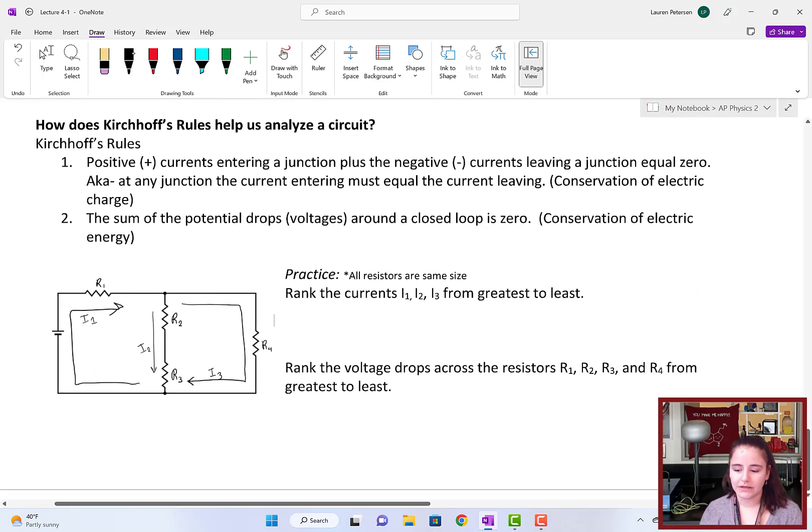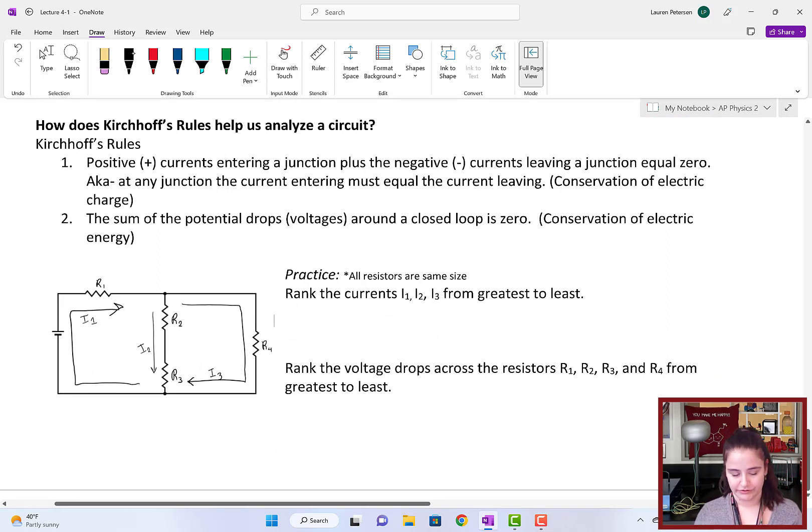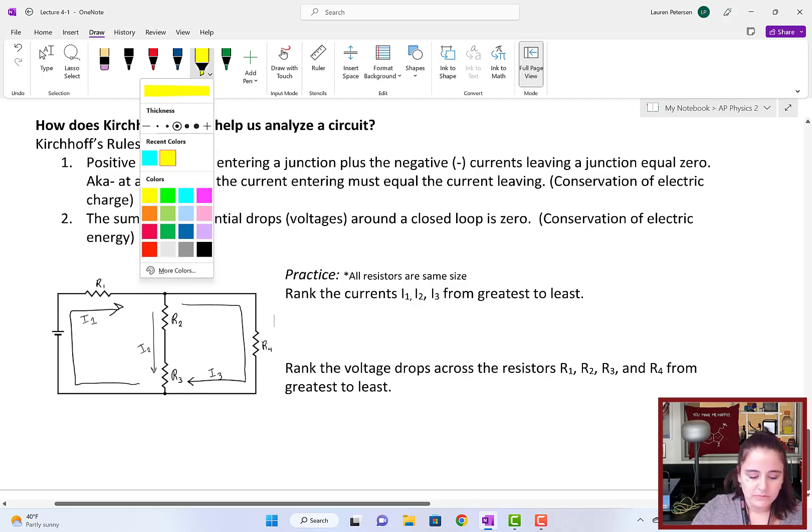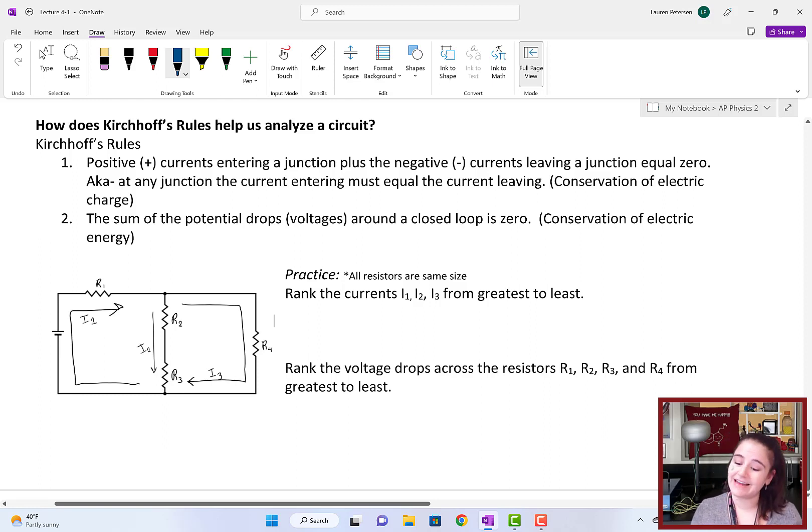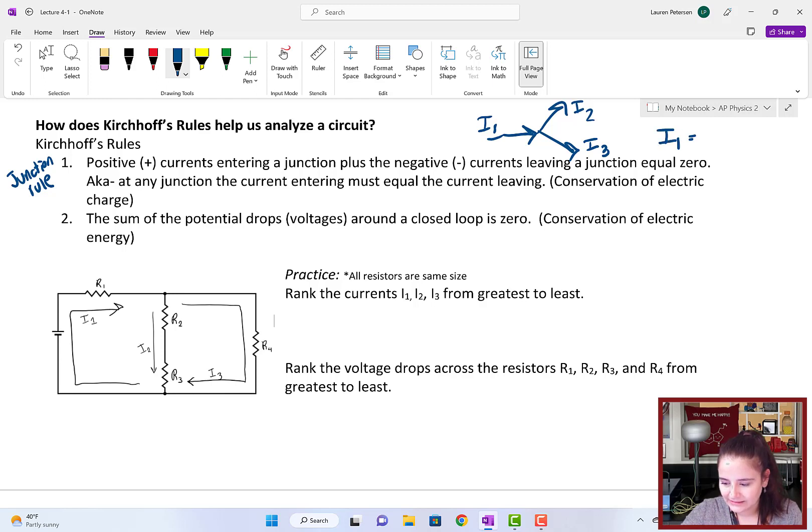For most of these, we will be using Kirchhoff's rules to help us analyze circuits. What they are is that any positive currents entering a junction plus the negative currents leaving a junction must equal zero. So this is the junction rule. And really, this is just conservation of electric charge. If you have some current I1 going into a junction, and you have two currents coming out, I2 and I3, then we know that I1 must equal I2 plus I3. Because it is a junction. The current splits, so the charge splits, can't have all the charge go in in one direction, so they're going to be equal.